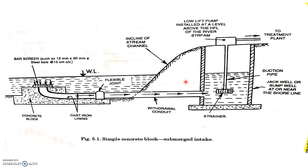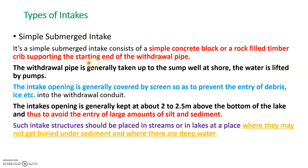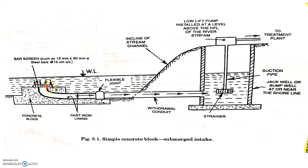The slump tank is generally constructed on the shores of the river. You have an intake over here. The conduit has been supported by a grub; it may be of concrete or cast iron. It is covered by a screen so that debris does not enter the intake structure itself. The screen is placed to prevent debris from entering, and this is in a river or a lake.